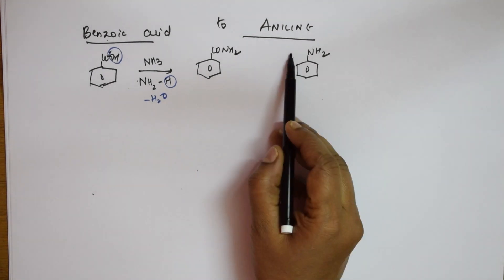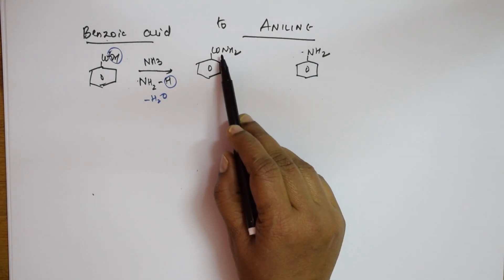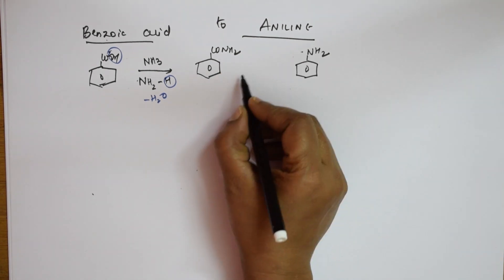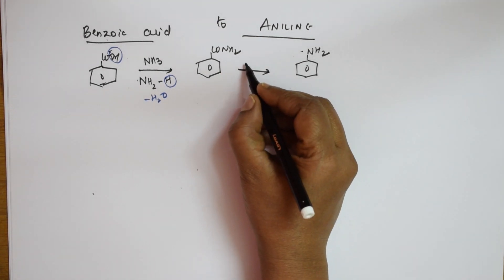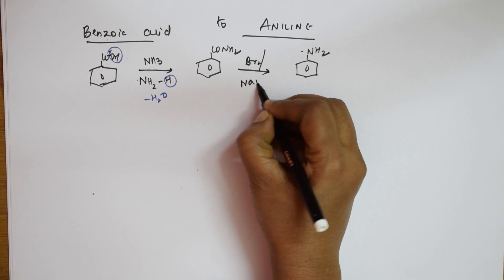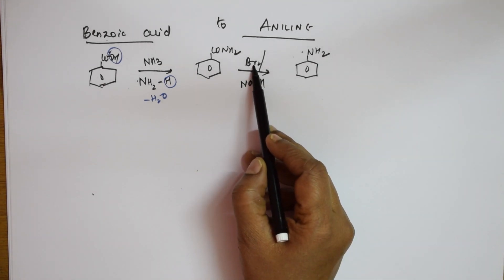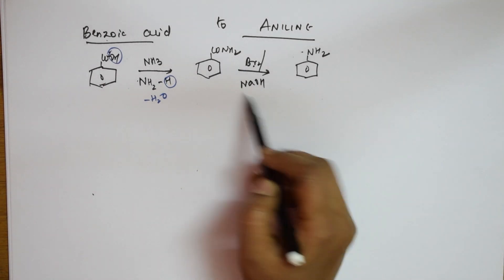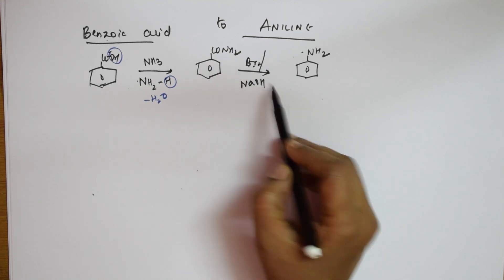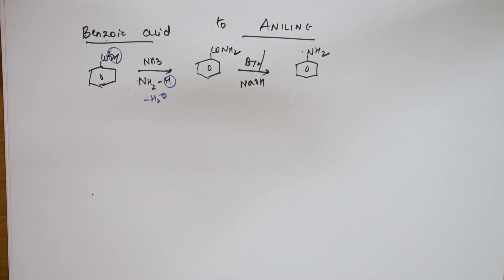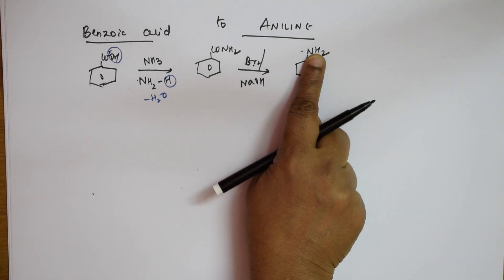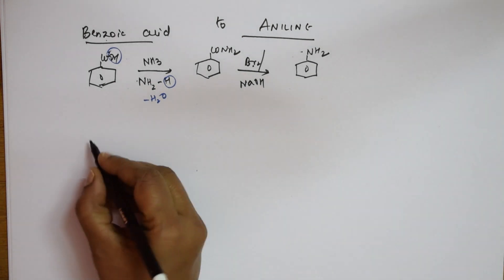Now I am left with CONH2. I need to take out the CO from NH2. I am going to add bromine in the presence of NaOH — Hoffmann's bromide degradation method. When I add this, NaBr comes out and the whole CO group is eliminated, leaving aniline with NH2. This is Hoffmann's bromide degradation. Whenever you see amine as the product, you first add ammonia to get benzamide, then apply this step.